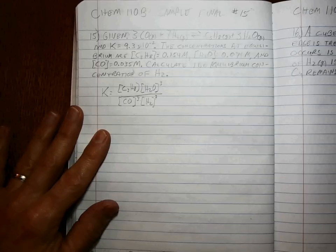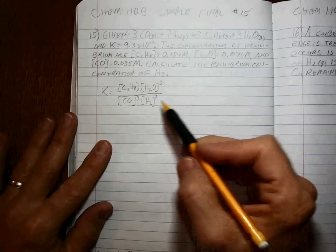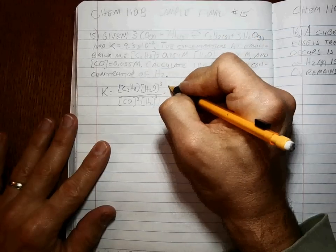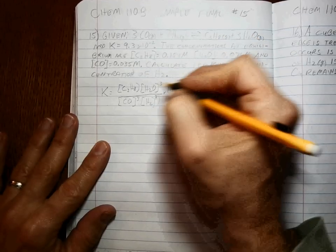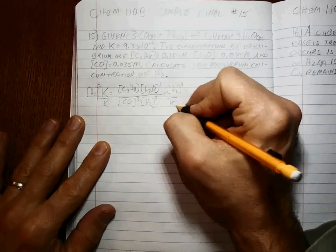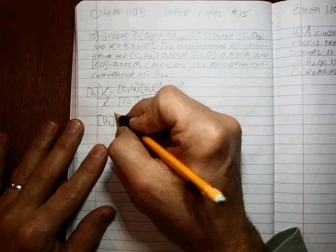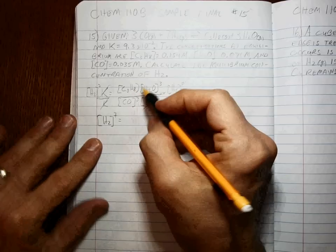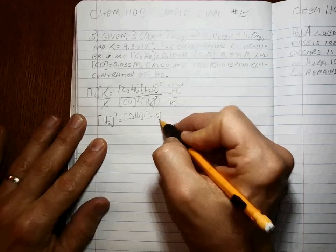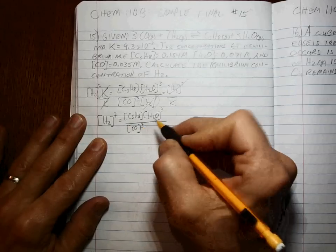Okay, so that's the formula and what do we solve for? We're solving for the H2 concentration, so let's get that up there right away. Solve for it first doing simple algebra and then we can plug and chug. H2 to the seventh power is equal to the C3H8 concentration times the H2O cubed concentration divided by the carbon monoxide cubed concentration